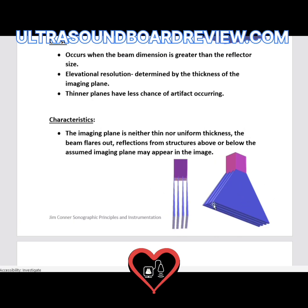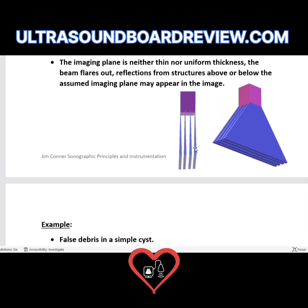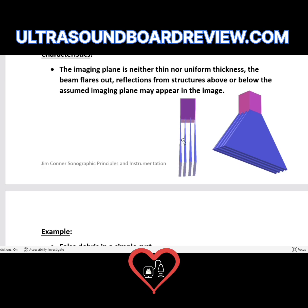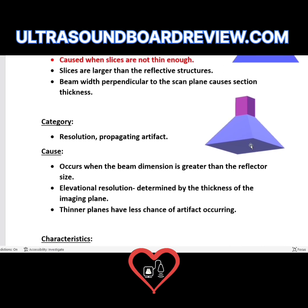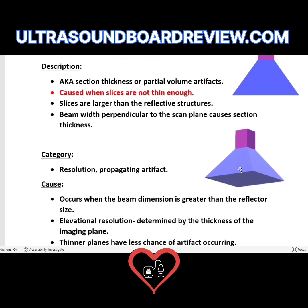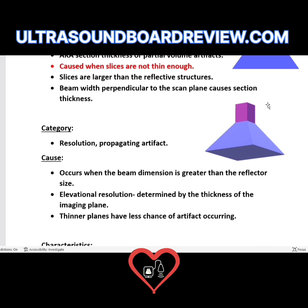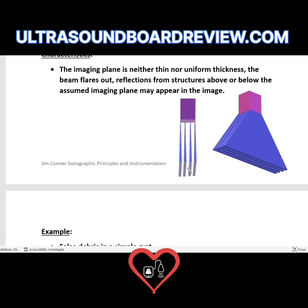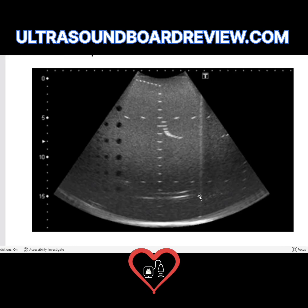The way you prevent slice thickness artifacts is by using a 1.5 dimension transducer. If you're imaging in one area but there's a bright echogenic structure slightly outside that plane, that bright echogenic structure is going to show up in your beam — this is a slice thickness artifact. Just by looking at this image, you can see that axial and lateral resolution is degraded — you can't tell the distance between the two pins.